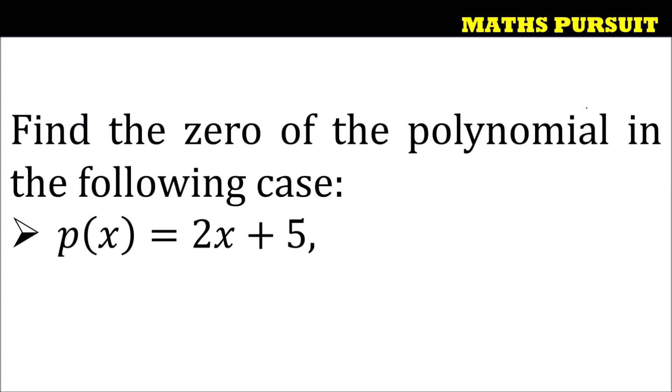The given question is find the zero of the polynomial in the following case, and the given polynomial is p(x) = 2x + 5. So guys, let us see how we can find out the zero of the given polynomial.